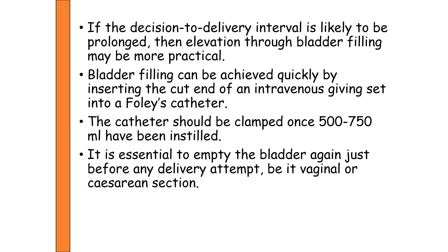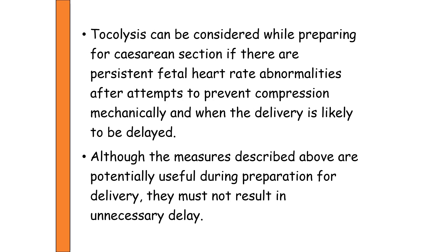For bladder filling, insert a catheter and instill 500 to 700 ml of saline, then clamp the catheter. This fills the bladder and displaces the presenting part upward. Before proceeding to delivery — whether vaginal or cesarean — empty the bladder. If persistent fetal heart rate abnormalities occur due to ongoing uterine contractions, tocolytics can be given to suppress uterine contractions and buy time before delivery.